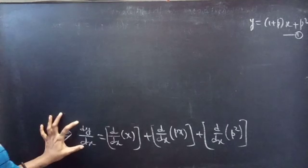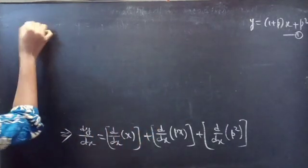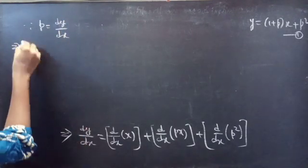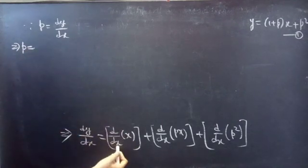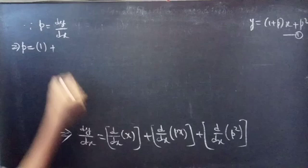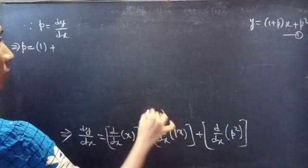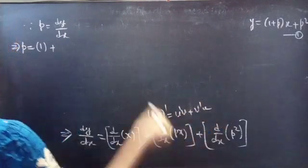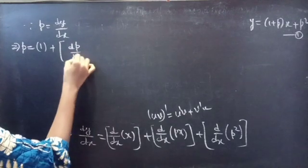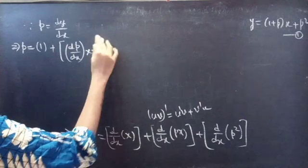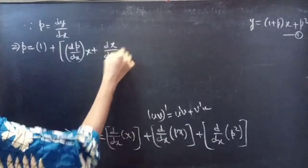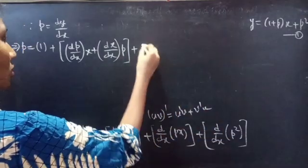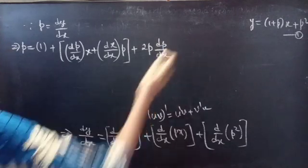We know that the derivative of y with respect to x is p, since p = dy/dx. So the equation becomes p equals derivative of x with respect to x, which is 1, plus derivative of px. Here we use the uv product rule formula, which is (uv)' = u'v + v'u. Then we get dp/dx · x + 1 · p, plus derivative of p² is 2p · dp/dx.